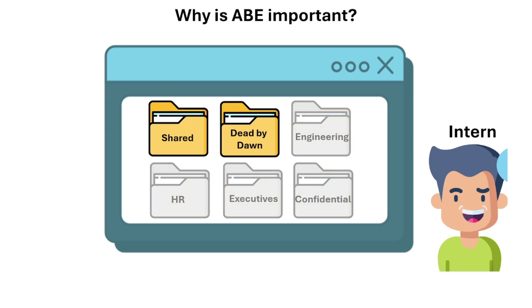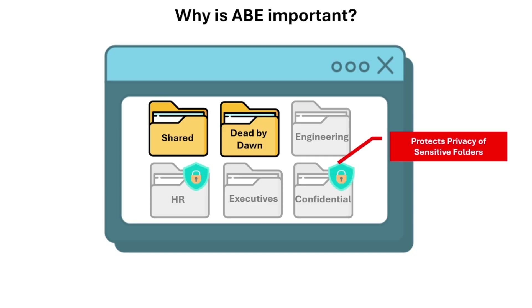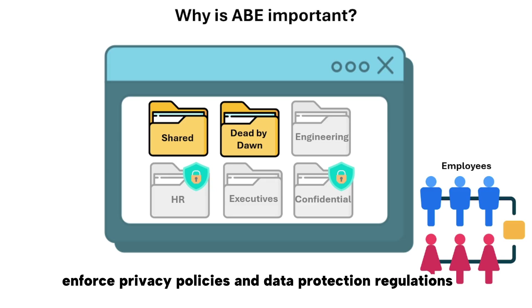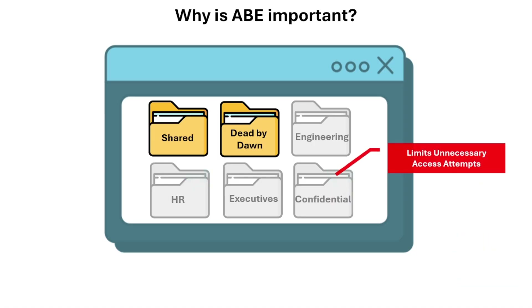ABE presents a cleaner, more intuitive experience by only showing relevant folders. It also protects the privacy of sensitive folders — departments like HR and Finance may store confidential data, so ABE ensures that folders like HR are invisible to non-HR users even if they know the path. This helps enforce privacy policies and data protection regulations.